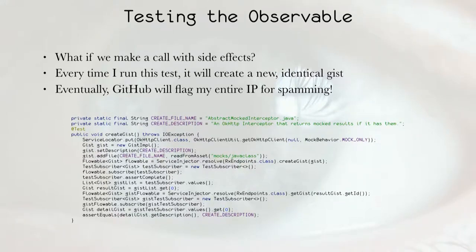Then we have the calls that have side effects. So this, for instance, uploads my mocking interceptor as an anonymous gist. I probably can't do that too many times. I'm assuming that eventually GitHub is going to notice that I keep creating the exact same gist and some negative consequence is going to happen.